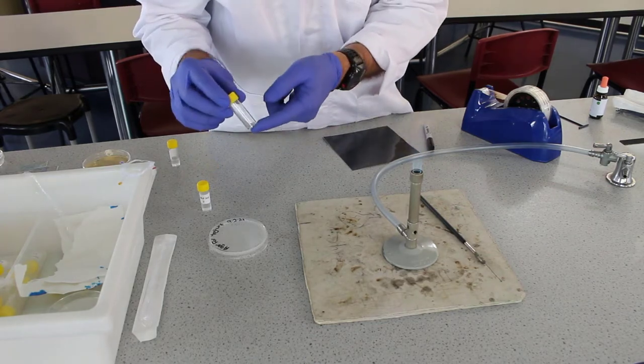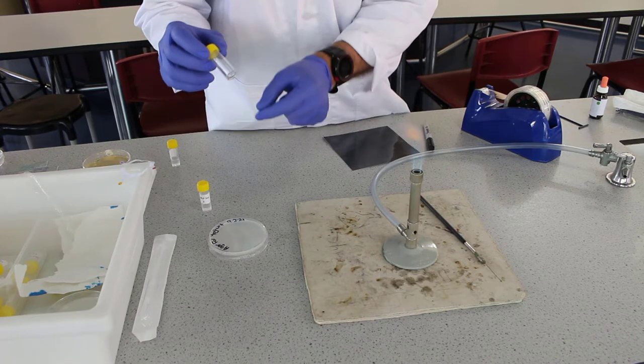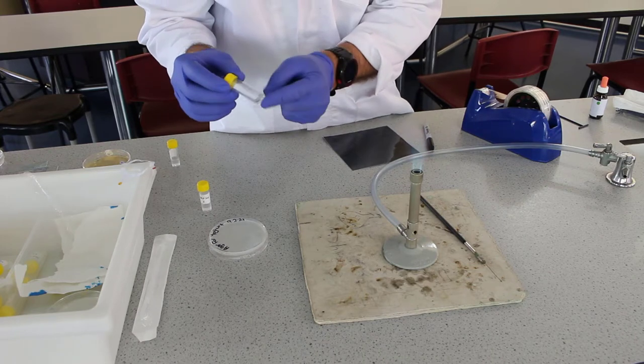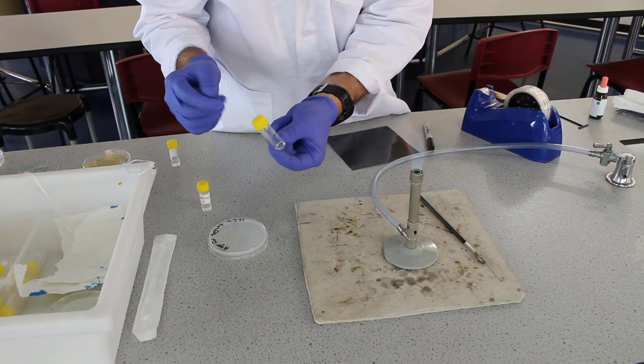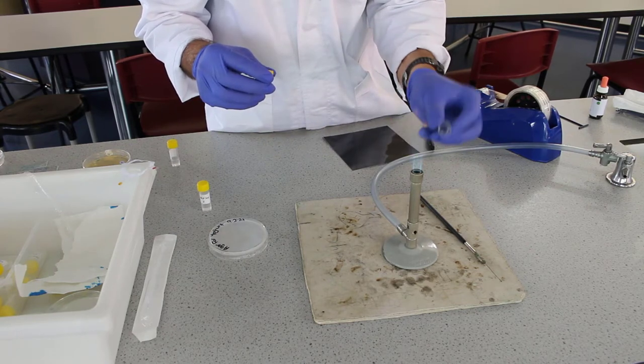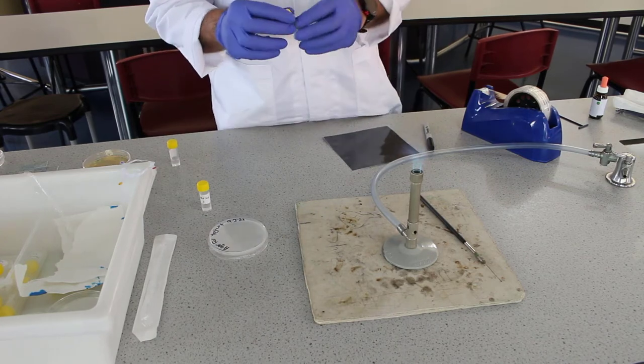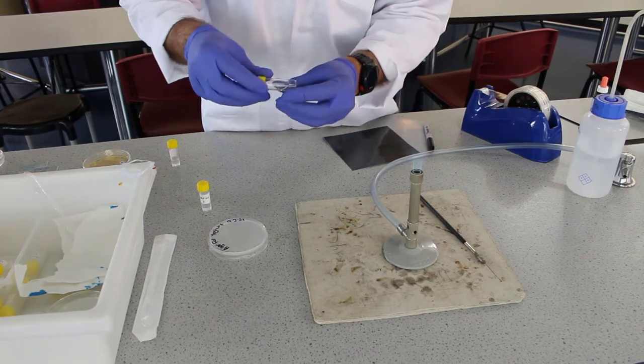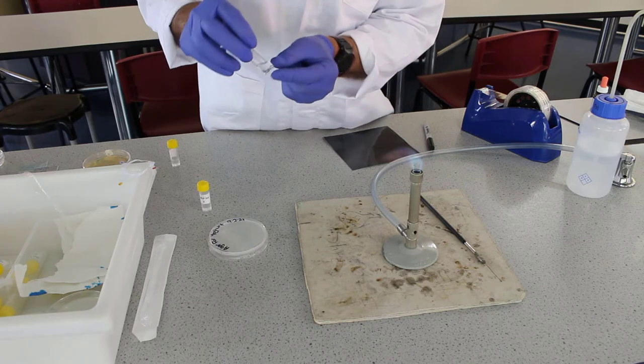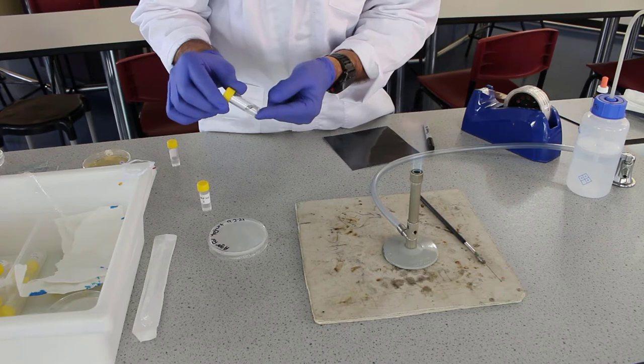The first thing we need to do is prepare our suspension that we're going to use to inoculate the plate. We're going to take a small vial and we're going to flame the neck. Because this is plastic we need to be careful we don't hold it under for too long. We're just going to put just a few mils of water in it.